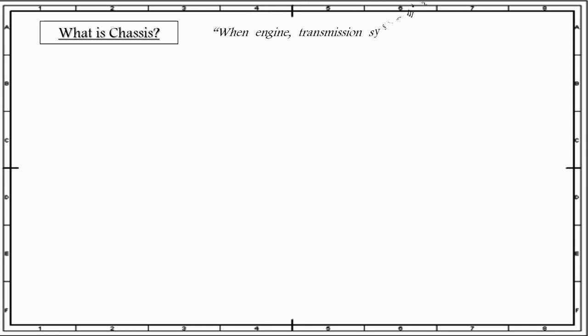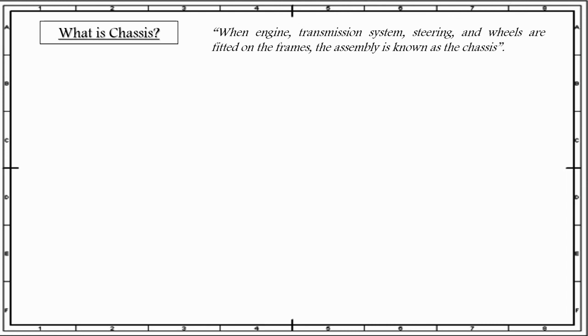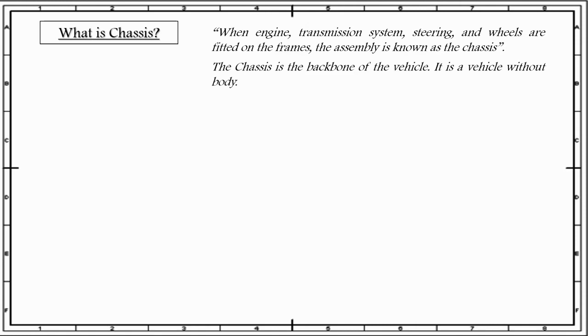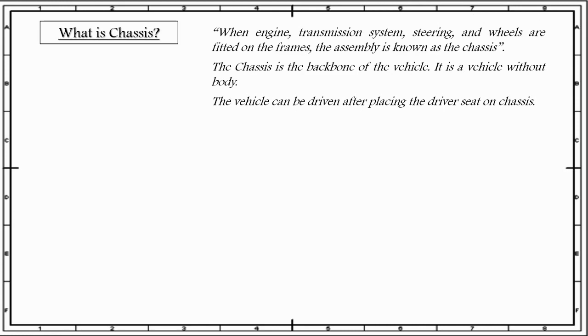First thing first, let us discuss what is chassis. When engine, transmission system, steering and wheels are fitted on the frame, the assembly is known as the chassis. The chassis is the backbone of the vehicle. It is a vehicle without the body. The chassis contains all the major units necessary to propel the vehicle. The vehicle can be driven after placing the driver seat on the chassis.